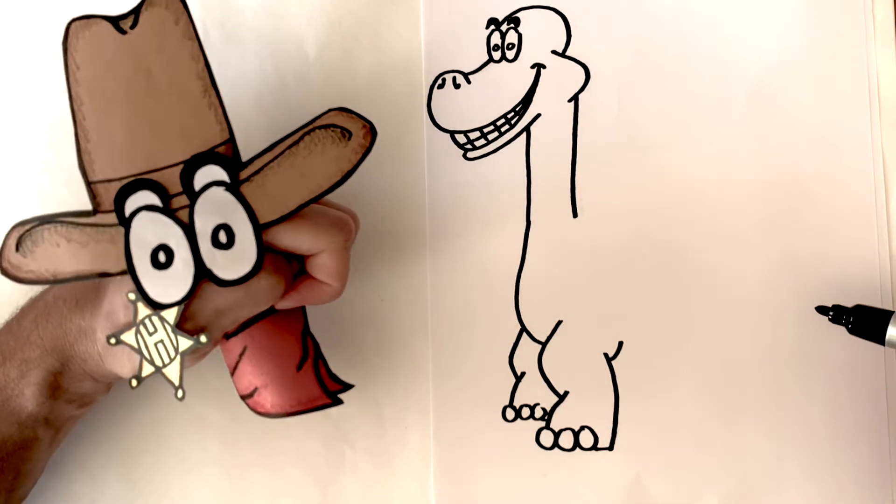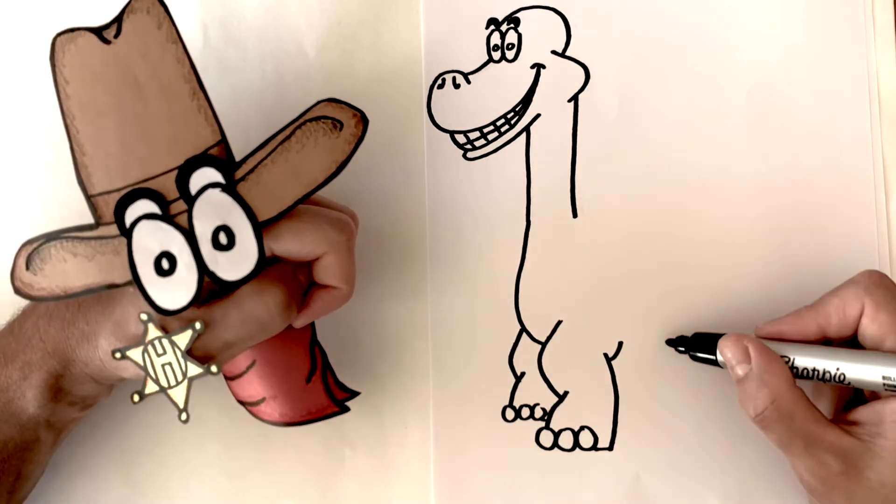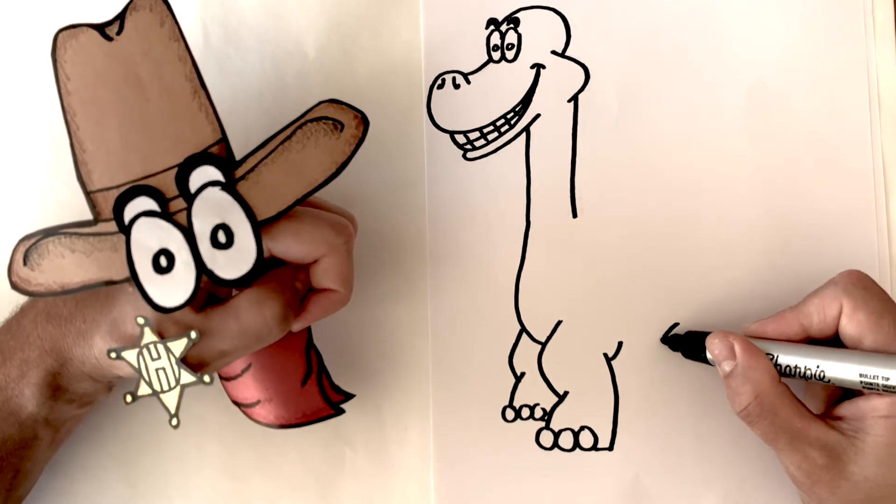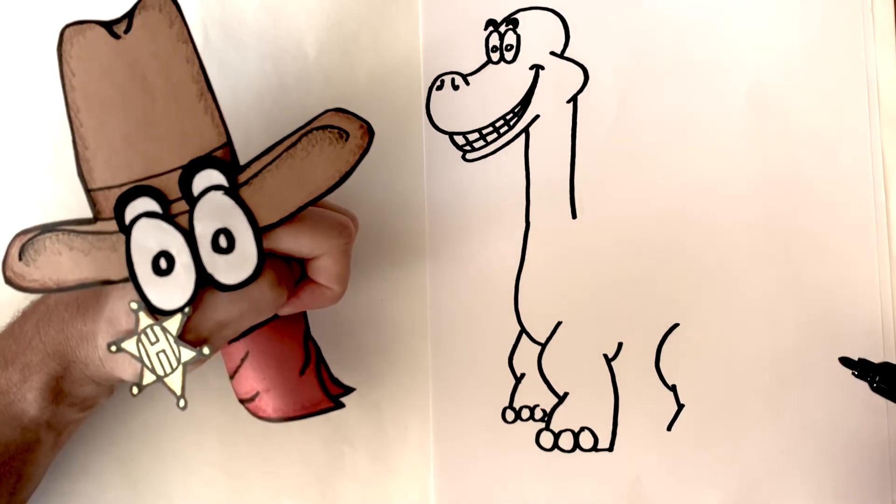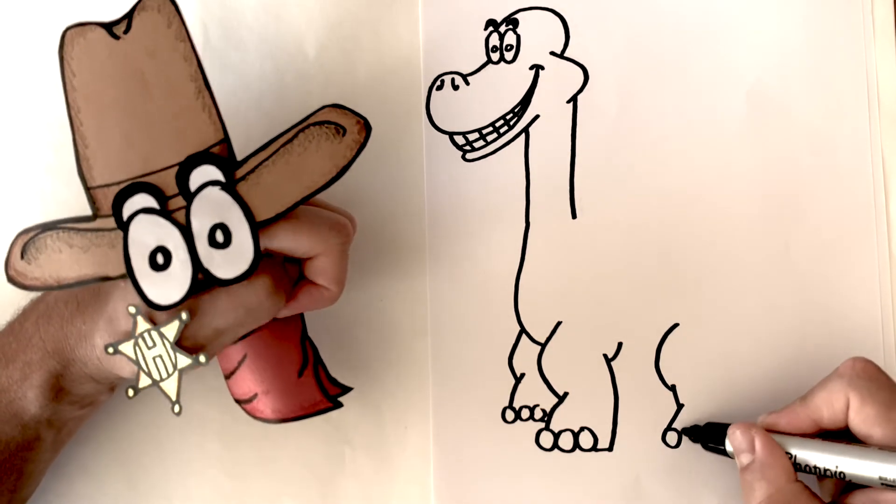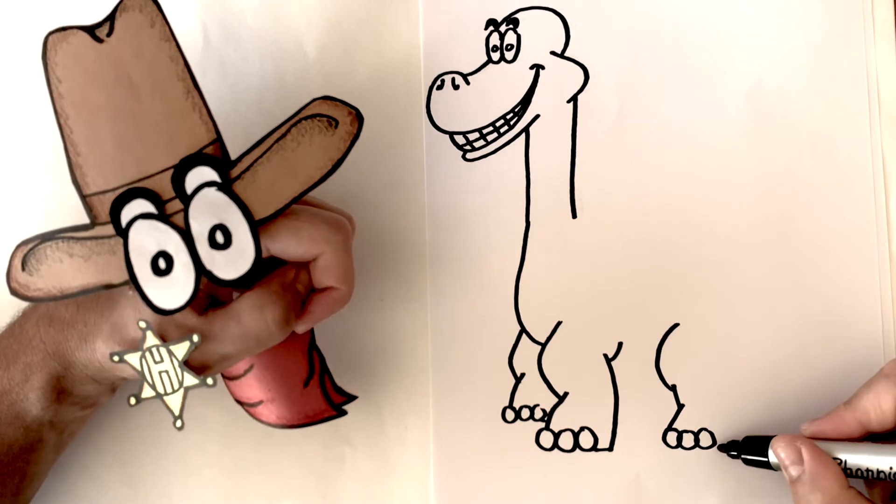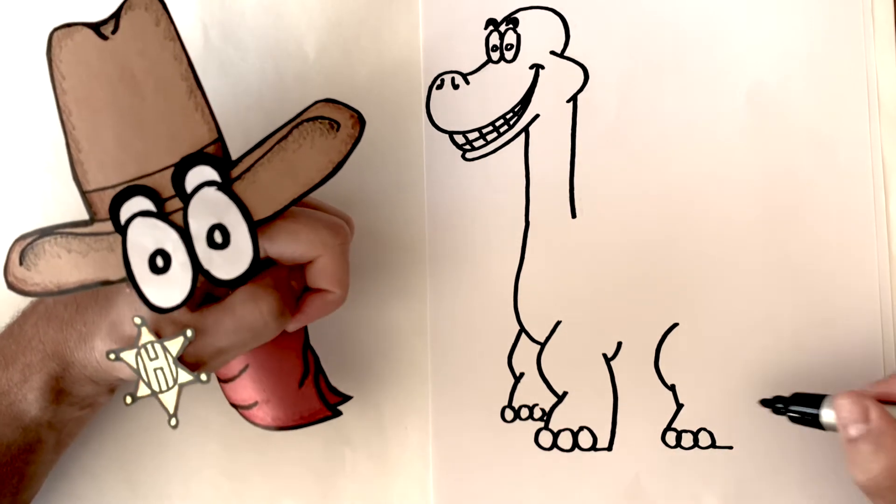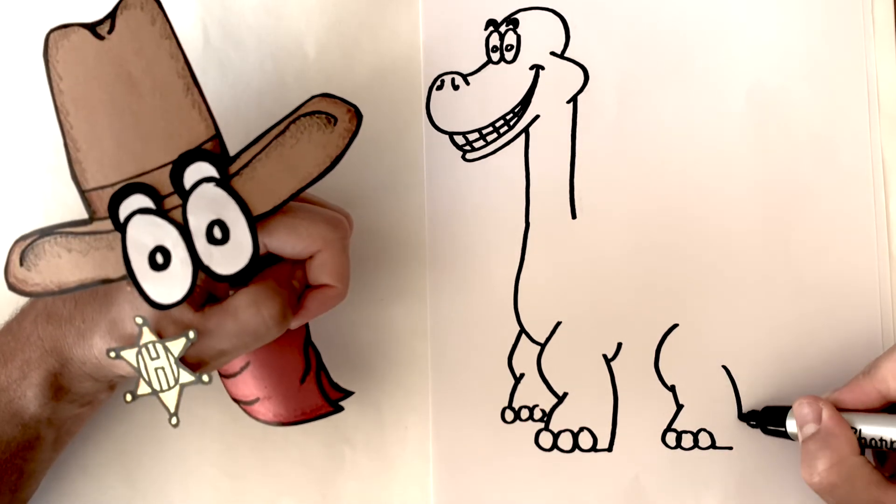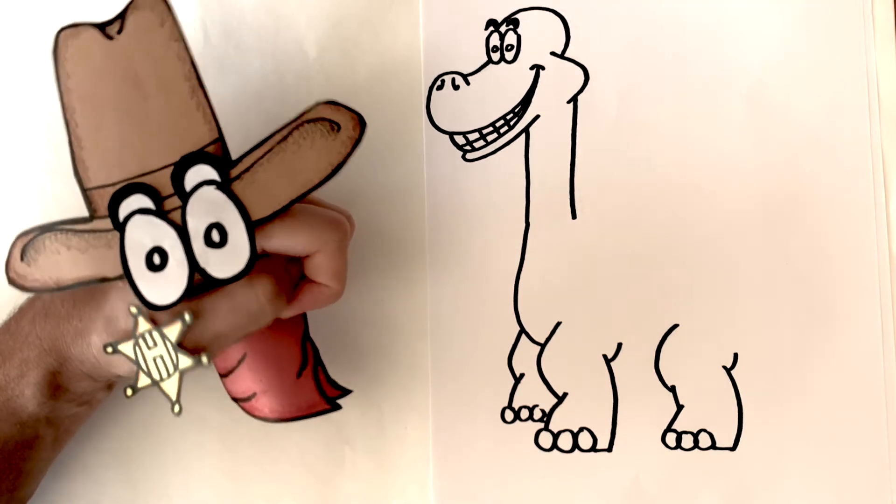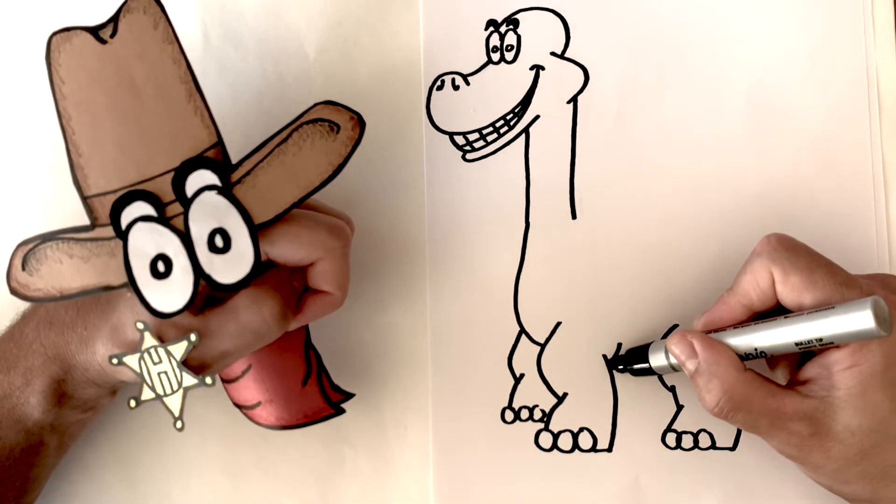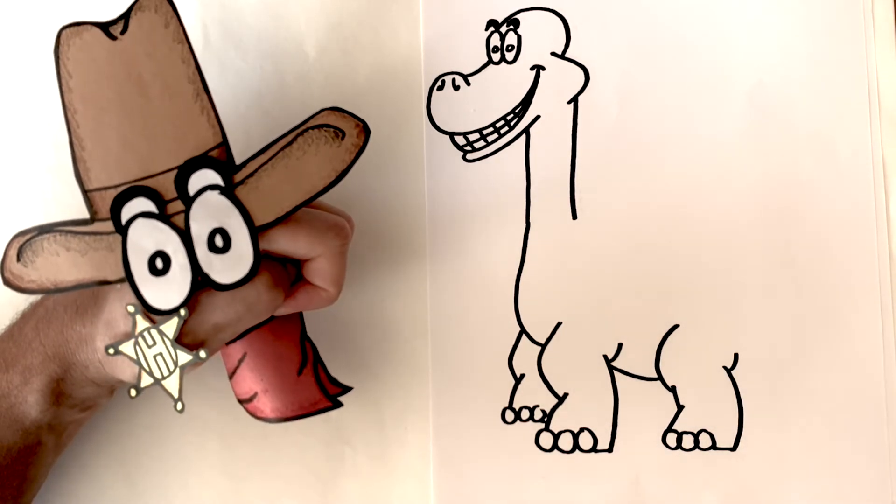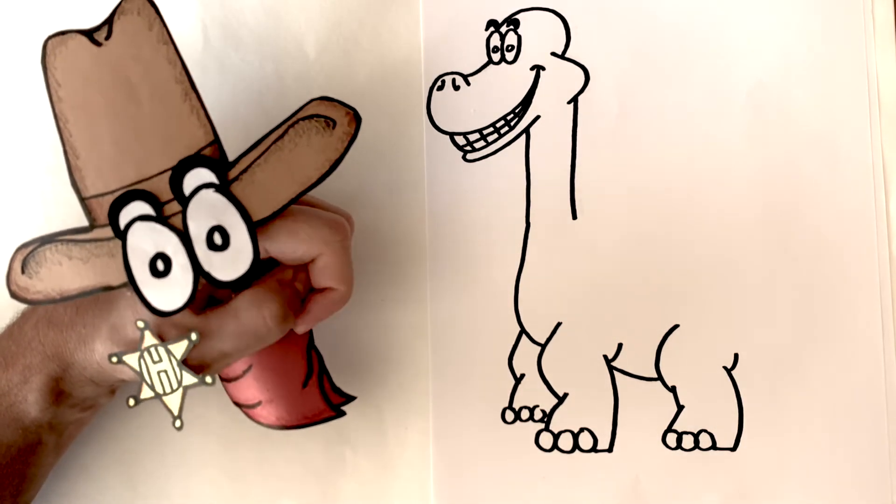Now we're gonna draw that second back leg right here. Just draw a curve. Straight line. Little line. Three circles. One, two, three. Little line. Bring it around. There you go! Now you have three legs. Draw a little line for the belly. And we have a good looking dinosaur going!